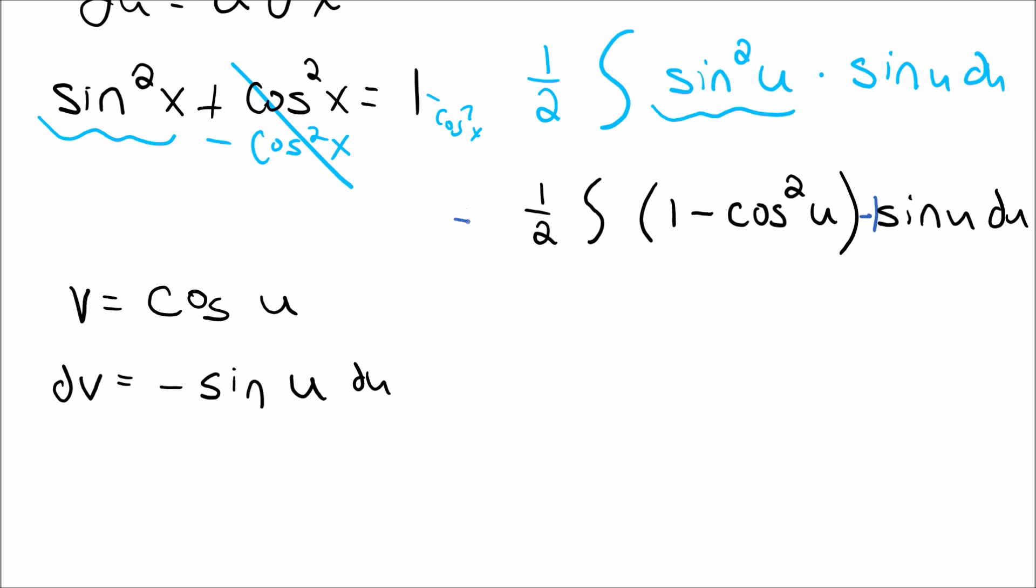But again, now I'm changing the problem. So to make up for that, I multiply by negative 1 out in front because negative 1 times negative 1 would be a positive 1. And again, we're not changing the problem. So let's keep going here.